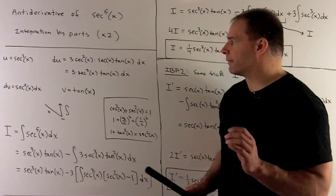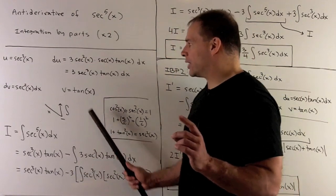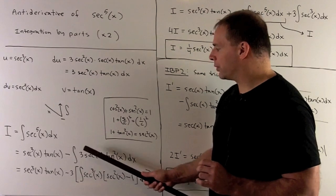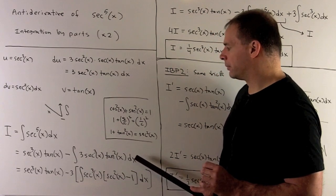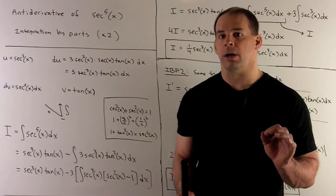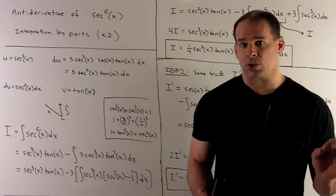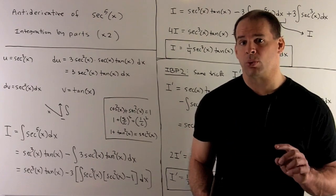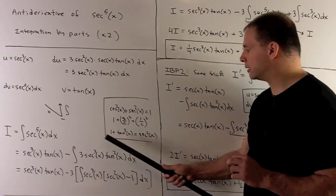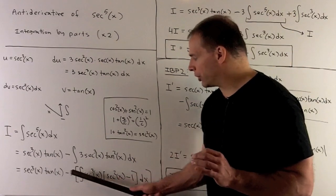We apply integration by parts. First step: multiply down the diagonal — that gives secant cubed tangent. Then take the integral up the column and subtract, giving minus the integral of three secant cubed tan squared dx. Our next move is to replace tan squared with secant squared minus one. I remember this from cosine squared plus sine squared equals one — divide through by cosine squared to get one plus tangent squared equals secant squared, then push the one to the other side: tan squared equals secant squared minus one. Now push through the minus three.